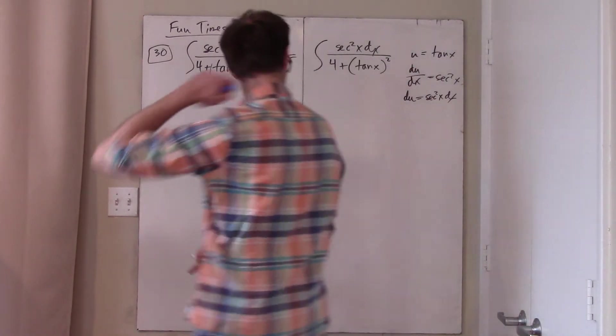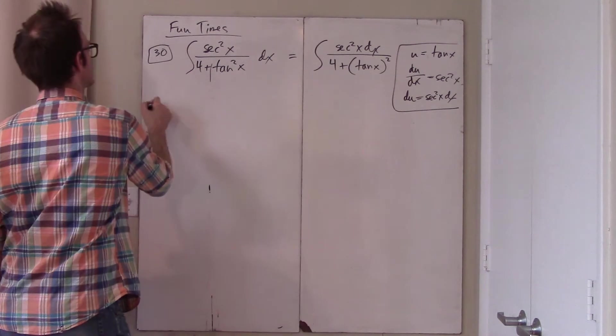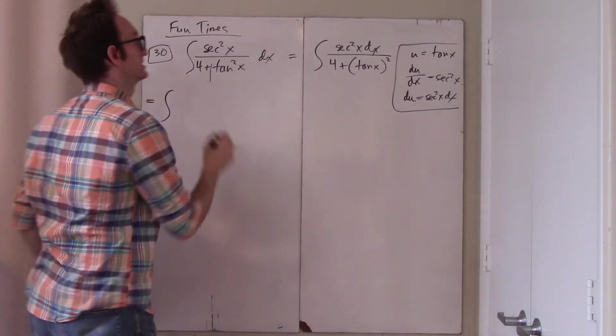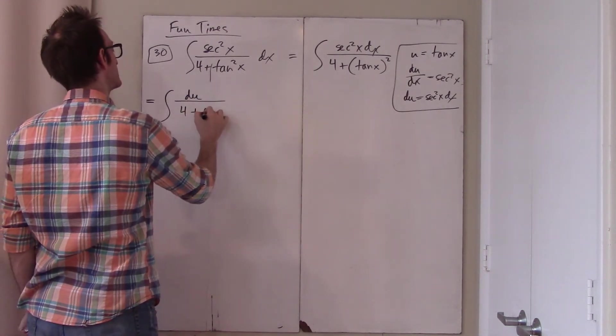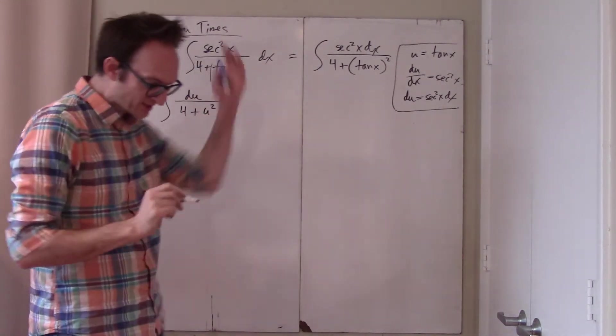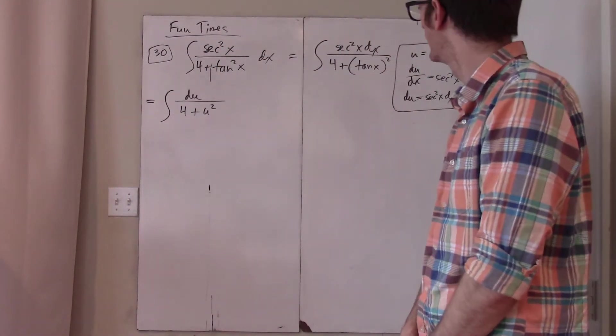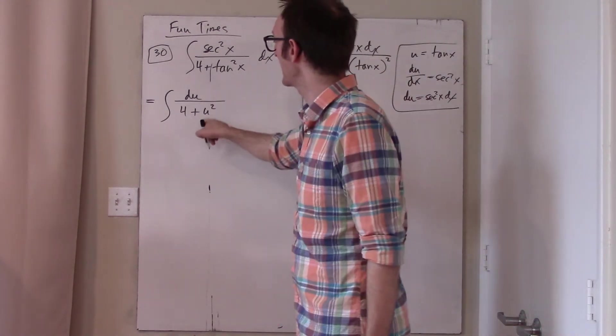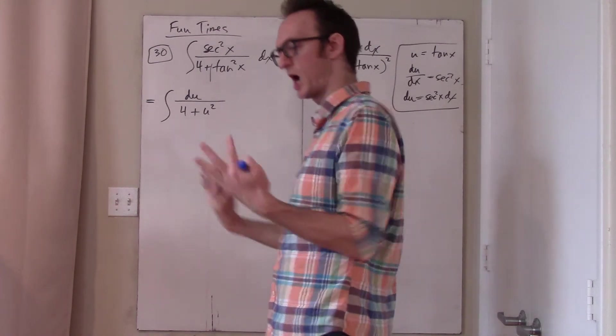Okay, so that's pretty nice because it means I can make a quick substitution of that numerator is just du, and then this is 4 plus u squared. And we actually just did this exact problem like 2 minutes ago, so maybe this is a little bit silly, but we do it again. How should you do this? You should see this and you should be thinking arctan.